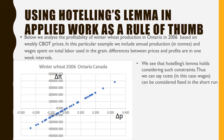For a more applied example, below we analyzed the profitability of winter wheat production in Ontario in 2006 based on wheat leaf seabot prices. In this particular example, we included annual production in terms of tons and wages spent on total labor used in grain. Differences between prices and profits are in one-week intervals. From this chart, we can see this nice straight line cutting through the origin, and we can say that Hotelling's Lemma holds considering such constraints.